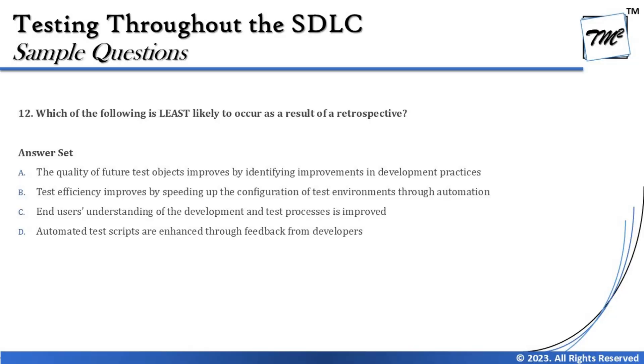So least likely means something which has no relevancy to retrospective. Option A says the quality of future test objects improves by identifying improvements in development practices. Indeed, when we talk about retrospective, one of the activities is to gather lessons learned, and it may help us to improve our development activities or overall process, because the contribution is not limited to testing — it talks about the entire process conducted together as a team. We gather to find gaps and inaccuracies in the process to improve it.